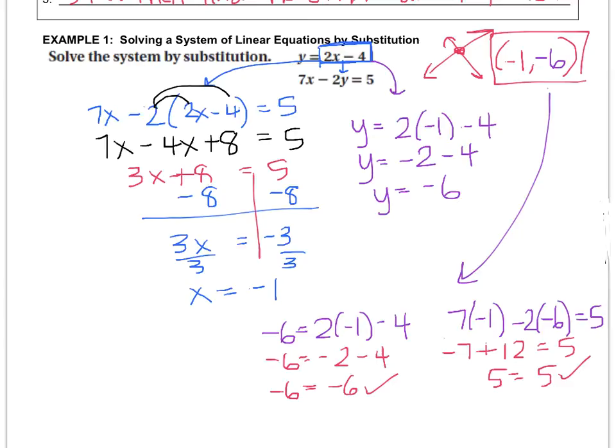So you see, both equations give you a true statement, which means this is the actual intersection point. So the answer to this question is negative 1, negative 6 is your intersection point.